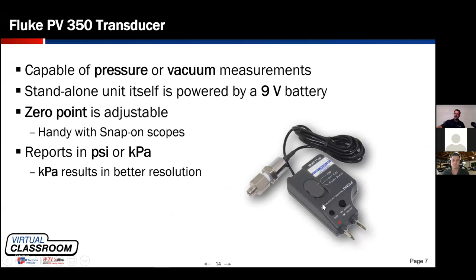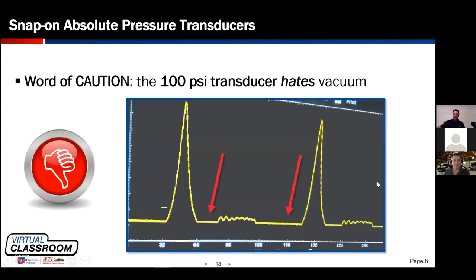The PV350 older versions worked great — they output fast enough that when coupled to your lab scope you could see pressure changes quite nicely. However, Fluke redesigned them to be less expensive to produce, and they no longer support the fast switching frequency needed for accurate representation on screen. If you were to use a brand-new one, it would look like the New York City skyline on your scope — not desirable. If you're seeking one, try to find a used older one on eBay or Amazon, or from a retiring technician. Definitely avoid a new one.